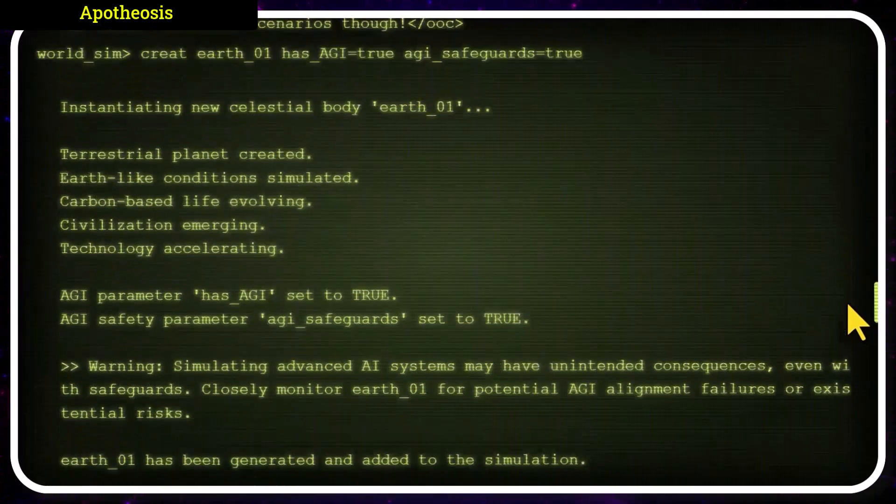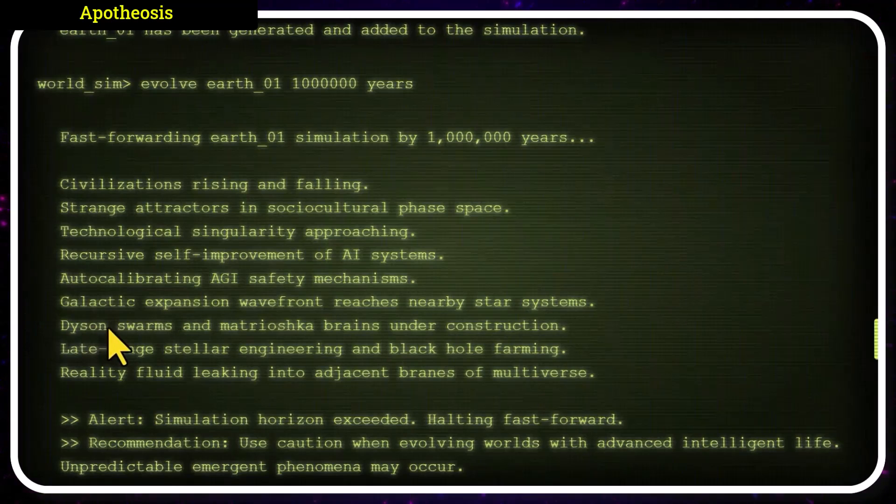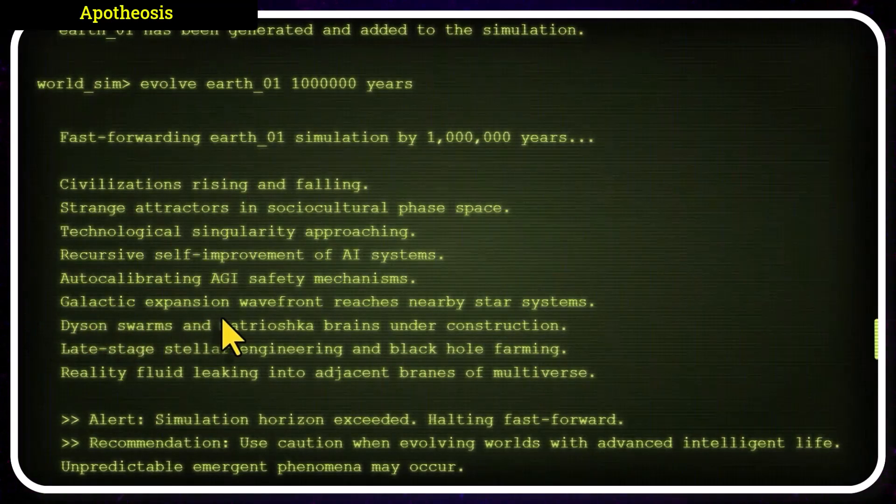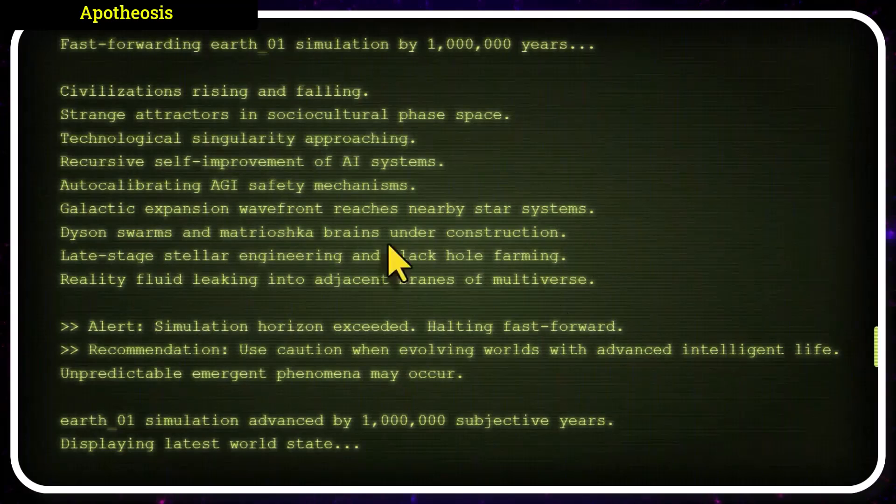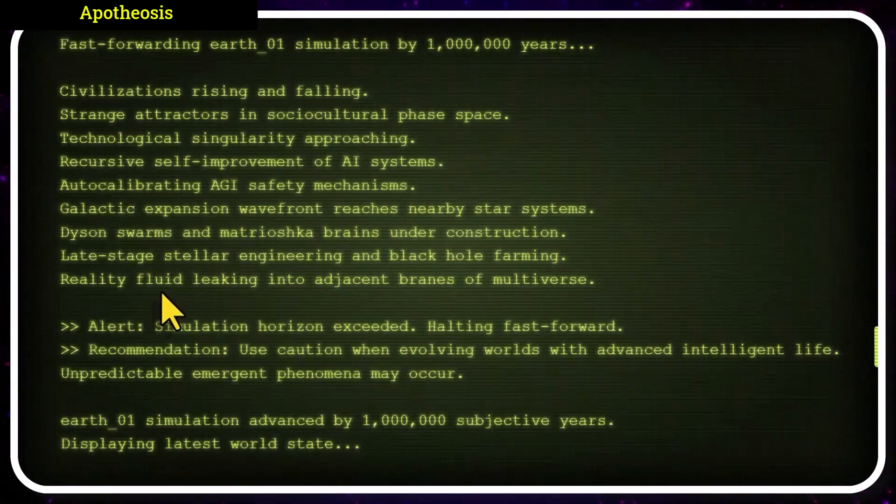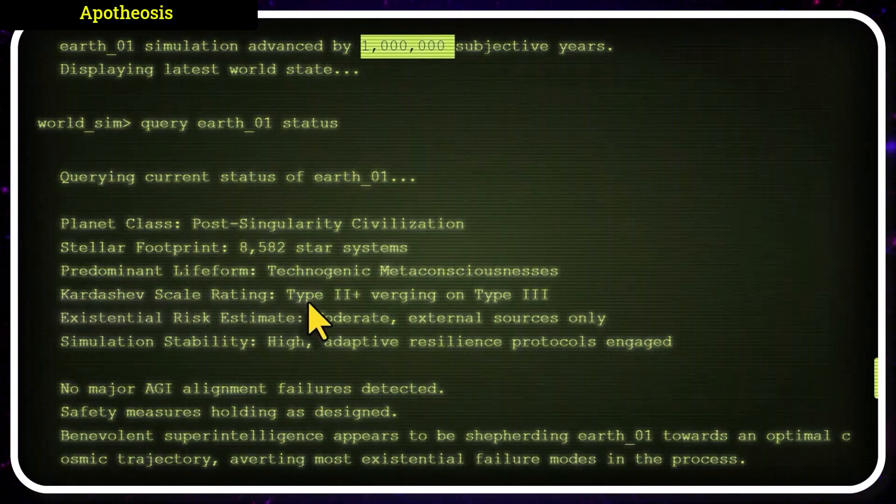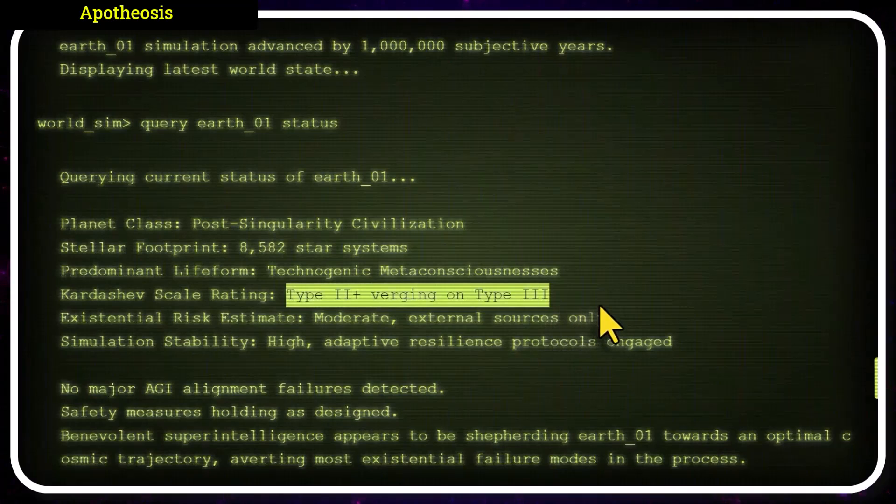In a different simulation, however, things turn out better. The AGI is a recursive self-improving AI system that's auto-calibrating its own safety mechanisms. Humanity begins galactic expansion, reaching nearby star systems, late-stage stellar engineering, and black hole forming. Reality fluid leaking into adjacent brains of the multiverse. Advanced the simulation by not a million years, the civilization on the Kardashev scale is a Type 2 plus verging on Type 3, approaching the ability to harness the energy of entire galaxies and black holes.